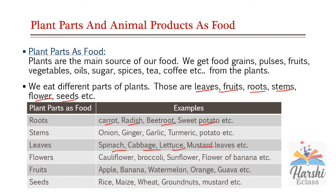Sometimes we eat flowers as food — for example, cauliflower, broccoli, sunflower, and the flower of banana. Fruits — many examples: apple, banana, watermelon, orange, guava, etc. Some exceptional cases: brinjal and ladyfinger are actually fruits but used as vegetables. Seeds — rice, maize, wheat, groundnuts, mustard, etc. We also get oil from groundnuts and mustard.